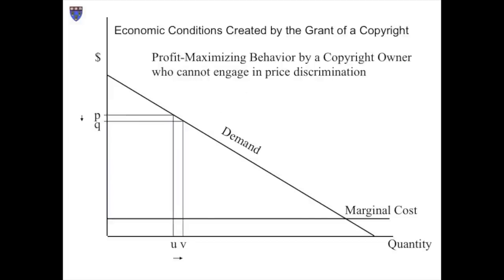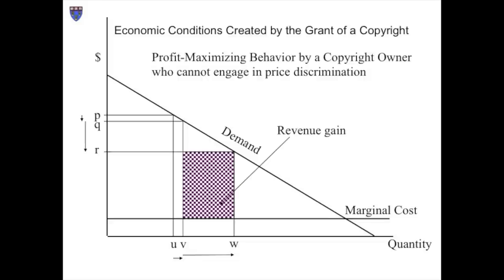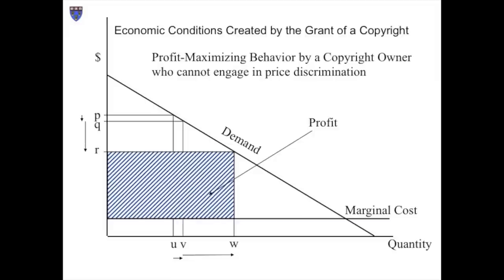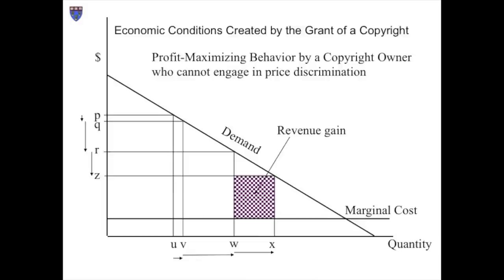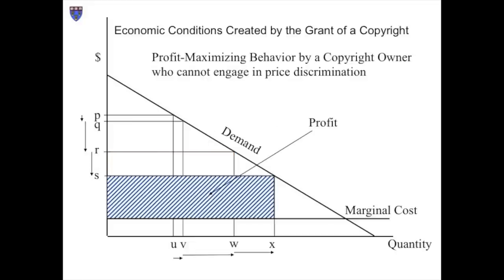Encouraged by this beneficial price reduction, the managers lower the price more dramatically in month three — an even larger number of people buy it, and the revenue gain again exceeds the revenue lost. So the managers try once more, reducing the price from R to Z. An even larger number of people buy it, but this time the price reduction turns out to have been a mistake: the revenue gained through increased quantity is smaller than the revenue lost because of the price reduction. This is a possible experimental way of discovering the profit-maximizing price.